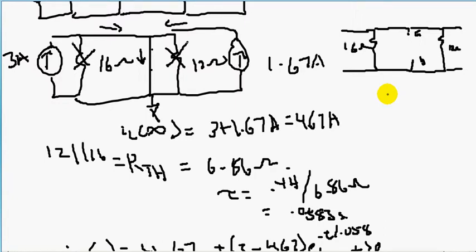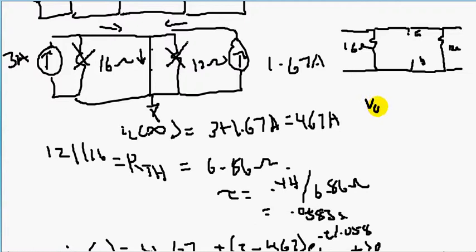Hello there. In the last video, you might have got confused about how I got the R_th for tau, L of R. How did I determine that 12 was in parallel with the 16-ohm resistor? We have to find V open circuit over I short circuit to find R_th.